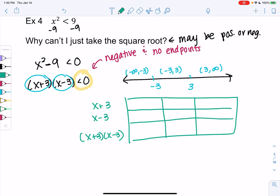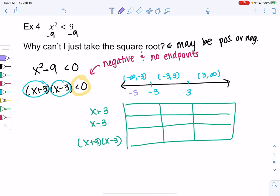We have less than zero, so we want negative intervals and no endpoints for less than. We'll start testing, plugging into all the factors: x plus 3 and x minus 3, then combine them. For negative infinity to negative 3, let's try negative 5. Negative 5 plus 3 is negative, negative 5 minus 3 is negative 8, so still negative. You multiply to make a positive. For the next interval, I like to choose 0. 0 plus 3 is positive, 0 minus 3 is negative, and we get a negative interval. For greater than 3, pick 8. 8 plus 3 is positive, 8 minus 3 is positive, and we get a positive interval.